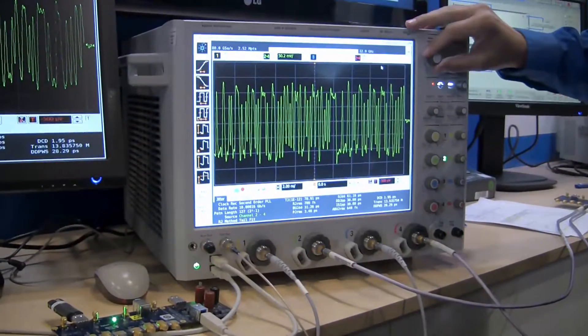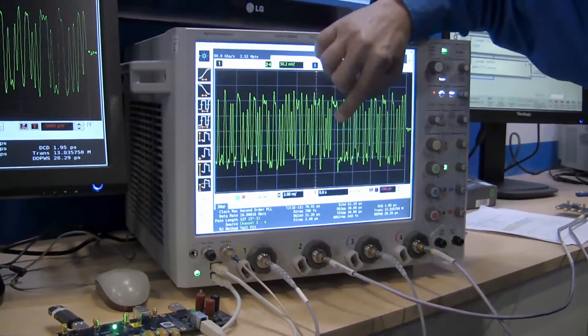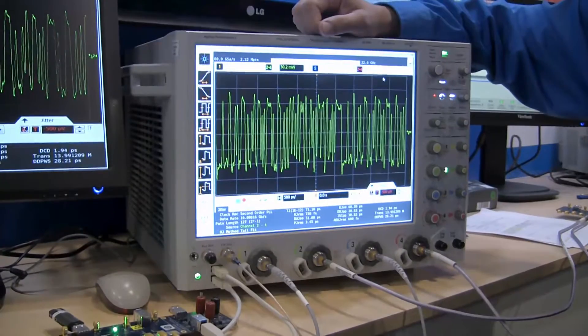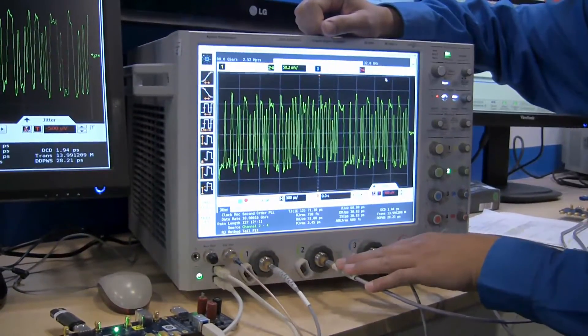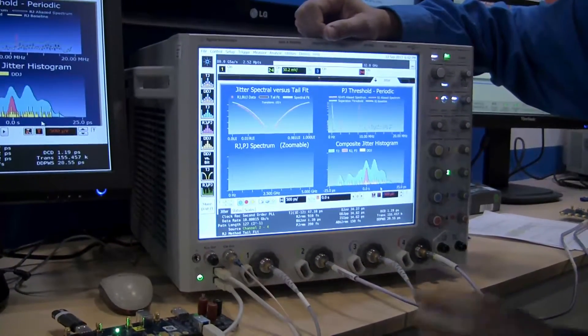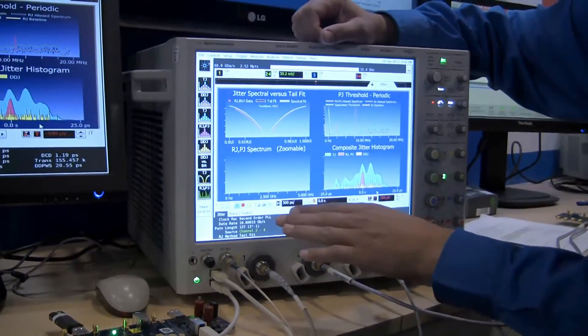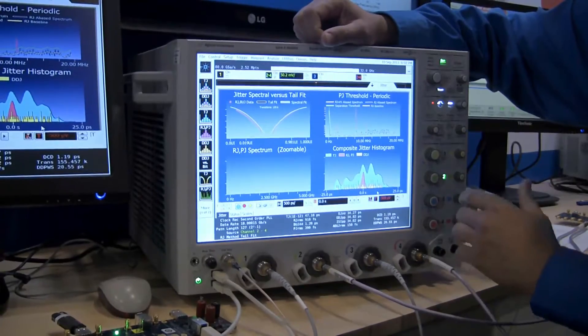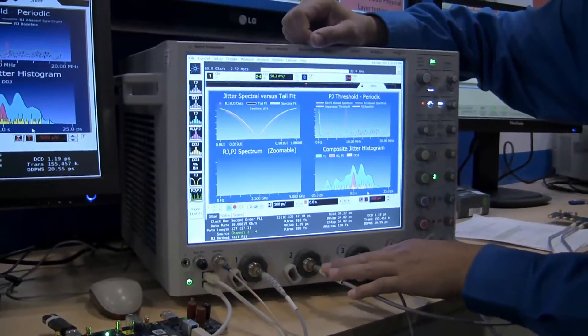So if you look at the bit times, we have a 100 picosecond unit interval on channels 2 and 4 inputs to the scope. And then using our jitter decomposition software, we're analyzing in real time the jitter on this signal coming in from our bit error rate tester.